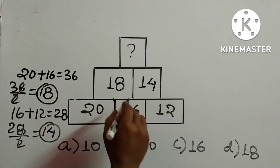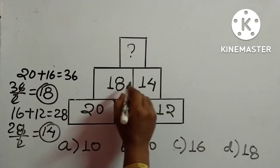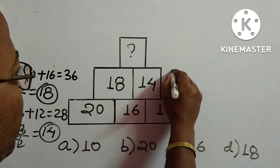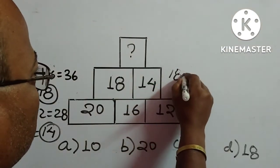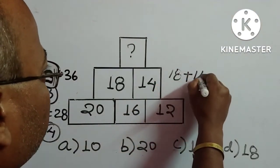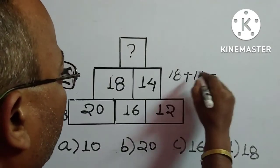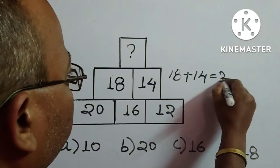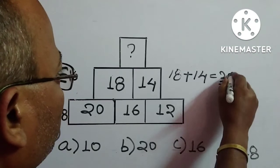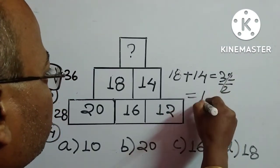According to the pattern, we have to add these two and divide it by 2. So 18 plus 14 is equal to how much? 32. Divide it by 2, so it comes to 16.